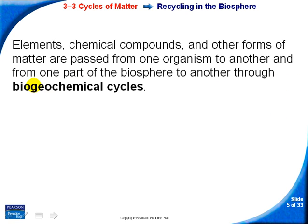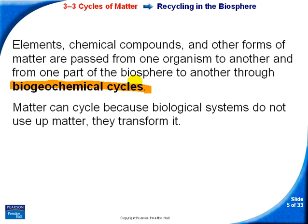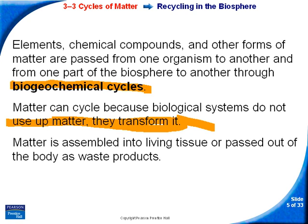We call these cycles biogeochemical cycles. This describes how elements, chemical compounds, and matter go from one organism to another. Systems do not use matter — they transform it, meaning they change it from one molecule to another. Those molecules are used for living tissue, and if they aren't used, they become waste products.